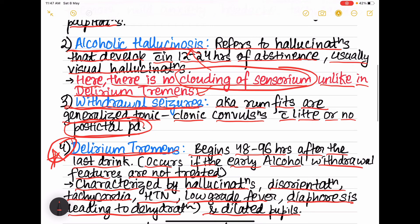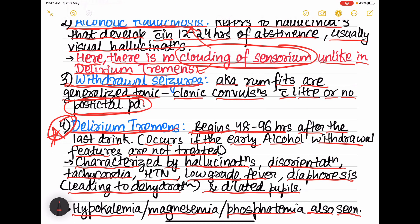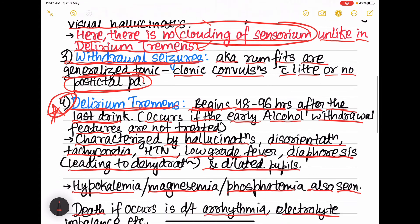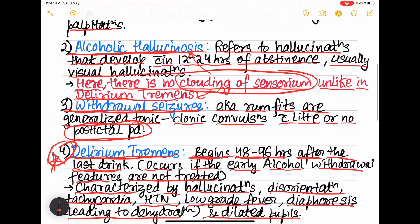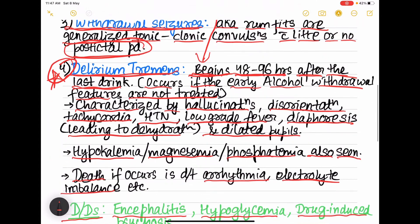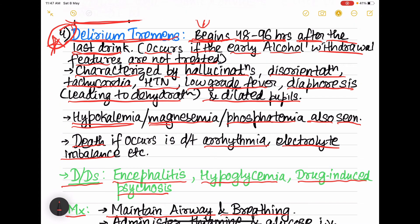It begins 48 to 96 hours after the last drink. And here we can see the clouding of sensorium which is not seen in case of alcoholic hallucinosis. Then hypokalemia, then hypomagnesemia, hypophosphatemia.